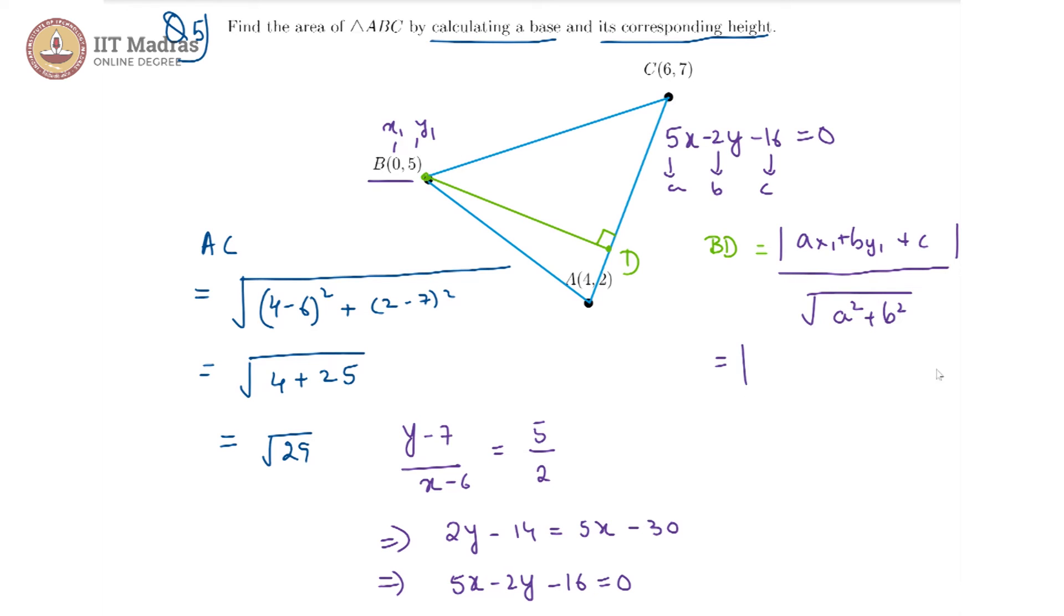So here we get modulus of 0 minus 10 minus 16 divided by 25 plus 4 which then gives us modulus of minus 26 divided by root 29. Modulus of minus 26 is then 26. So this would be the height.